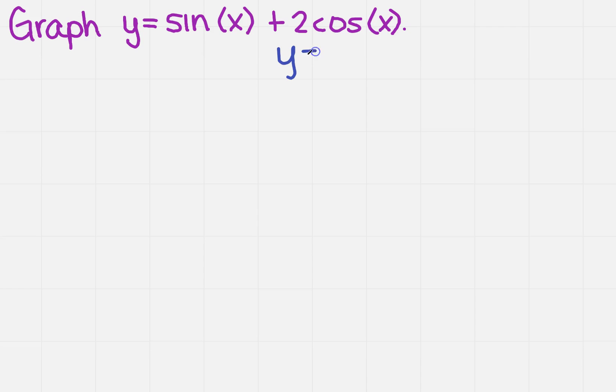So I have y equals sine of x, and then I'm also going to have y equals 2 cosine of x. What that means is I'm going to graph these two functions, and then we can determine how we're going to find them added together. So you try that on your own, come back, and check and make sure your graphs look like mine.